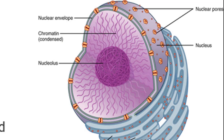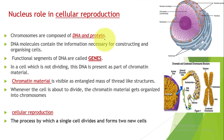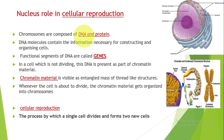Chromosomes are composed of DNA and protein. DNA is a nucleic acid, and the DNA molecule contains all the information necessary for constructing and organizing cells. The functional segments of DNA are called genes. So nucleus is the information center of the cell.